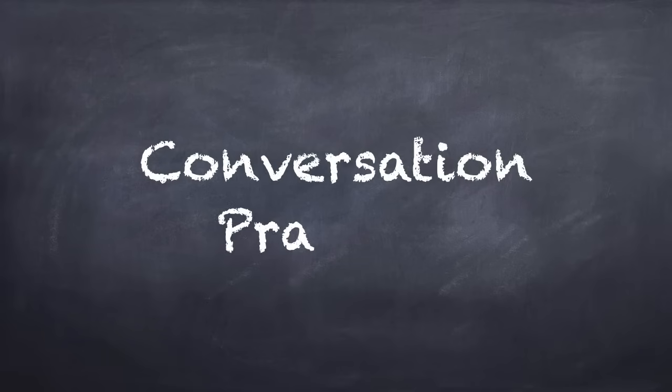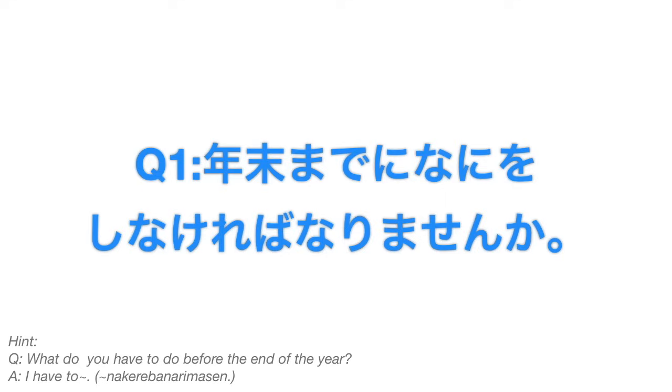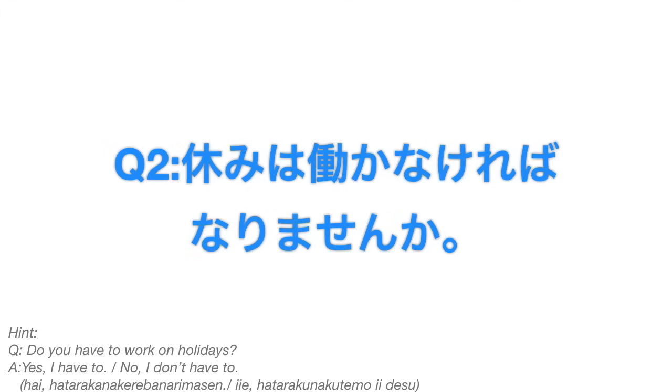It's time for our conversation or speaking practice. Nenmatsu made ni nani wo shinakereba narimasen ka? Yasumi wa hatarakanakereba narimasen ka? That's it for today's lesson — if you have any questions, write them in the comment section below. If you find this video helpful, please click the like button and subscribe. In our next lesson we will learn about the dictionary form of the verb. Thank you so much for watching — see you in the next one, bye bye!